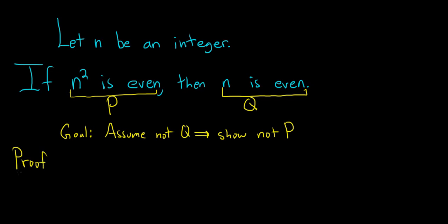So we'll start the proof by assuming that q is false. The opposite of even is odd, so we'll say suppose n is odd. I'm going to briefly recall the definitions of even and odd over here because they are absolutely vital and necessary for this problem.